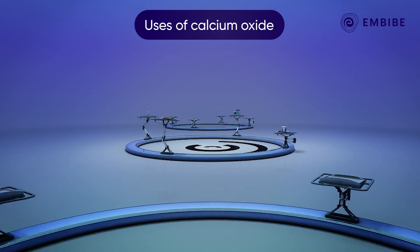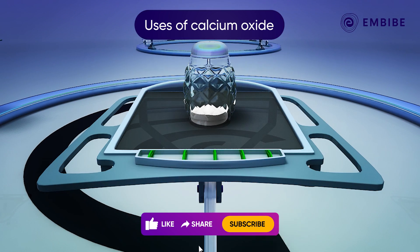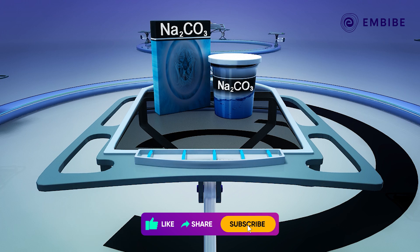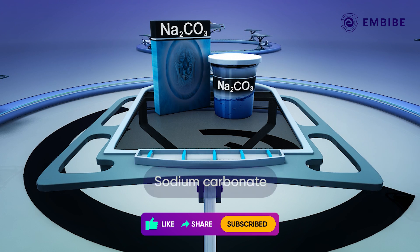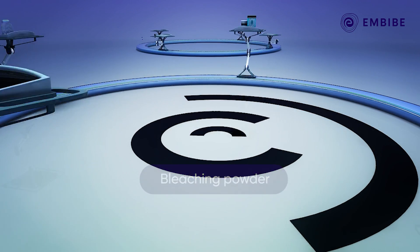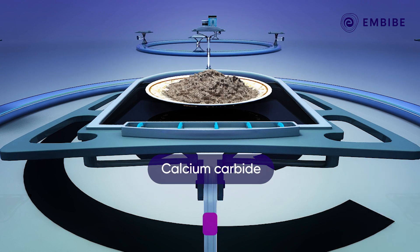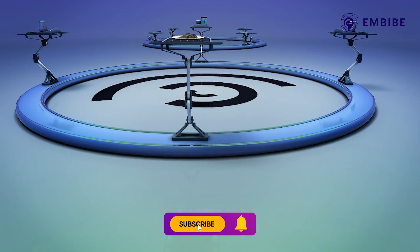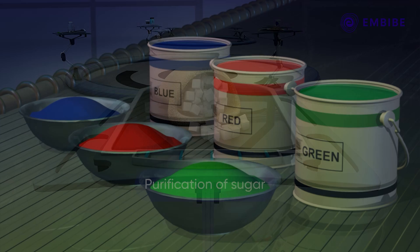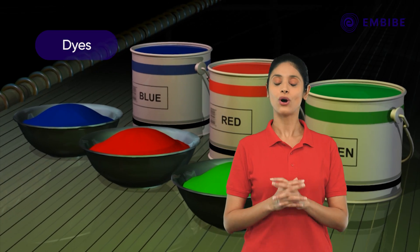Calcium oxide is often used as a raw material in the preparation of many substances like glass, sodium carbonate, bleaching powder, and calcium carbide. It is also used in the purification of sugar and in the manufacture of dyes.